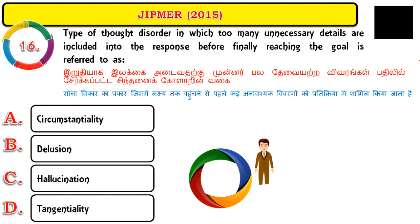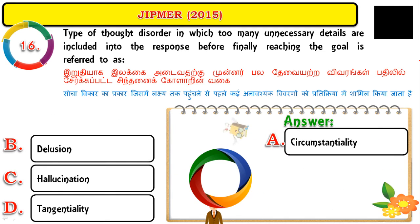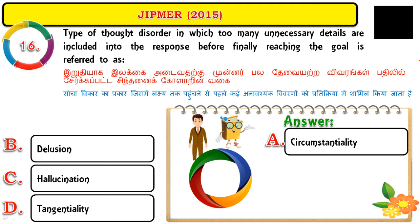Question number sixteen: the type of thought disorder in which too many unnecessary details are included in the response before finally reaching the goal is referred to as circumstantiality. This is the opposite of tangentiality — the person starts from a particular point, adds unnecessary information, but finally does give a conclusion to your question.